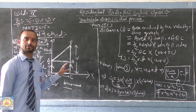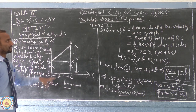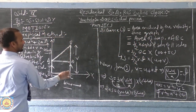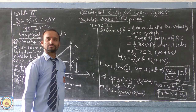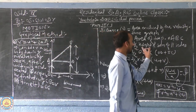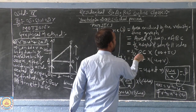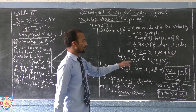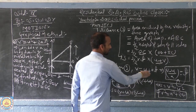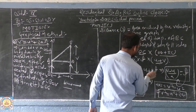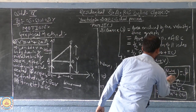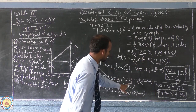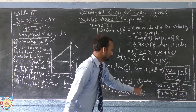To recap: to derive the third equation by graphical method, the distance s equals the total area enclosed by the velocity-time graph, which is the trapezium OABC. The area of the trapezium = ½ × height × sum of parallel sides = ½ × OC × (OA + DC) = ½ × t × (u + v). Substituting t = (v − u)/a from the first equation gives s = ½ × (v − u)/a × (u + v).